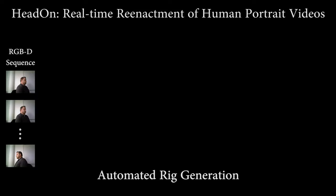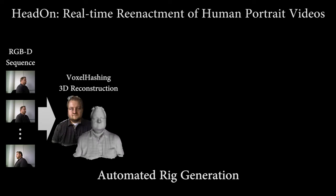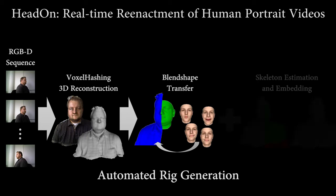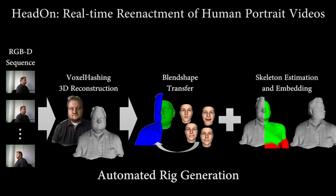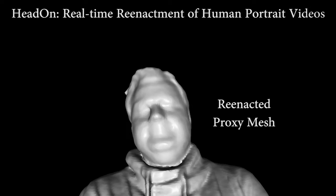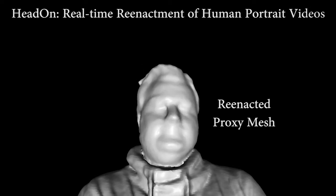HeadOn is based on a short RGBD video sequence of the target actor. From this sequence, we extract a proxy mesh using voxel hashing. To generate an animatable rig, a face template is automatically fit to this mesh. Using dense correspondences between the face mesh and the scanned mesh, we transfer blend shapes to the proxy. This automatic rigging enables us to fully animate the target proxy mesh.